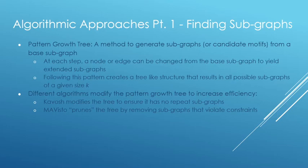This is most commonly done through a pattern growth tree. So with each level of the tree, a node or an edge of the base subgraph can be changed to produce a child subgraph. And then these children can also have a node or an edge change to produce their children subgraphs. So eventually we'll create all the necessary subgraphs.